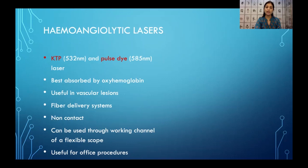For a long while, the CO2 laser was not available in a fiber delivery system, which was another advantage that the KTP and the PulseDye had. Now the CO2 is also available in a fiber flexible delivery system. The KTP and the PulseDye are non-contact lasers, and the fiber can be passed through the working channel of a flexible scope, which means they are very useful for office procedures.